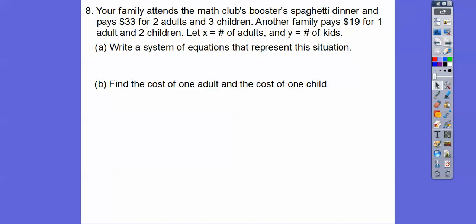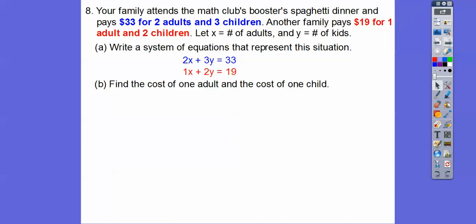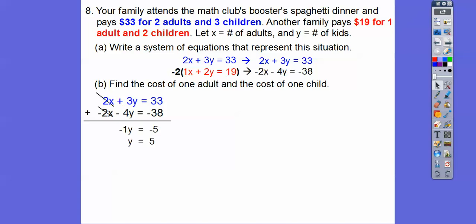So if x is the number of adults and y is the number of kids, one family pays $33 for two adults and three children: 2x plus 3y equals 33. Another family pays $19 for one adult and two children: x plus 2y equals 19. So there's our system of equations. To solve, take these two equations and either make the 2x terms cancel or the 6y terms. I'm going to multiply the second equation by negative 2, slide it on top, and add straight down — we get y equals 5.